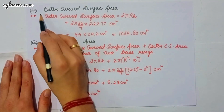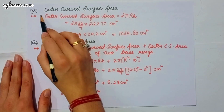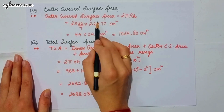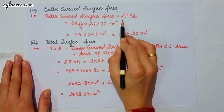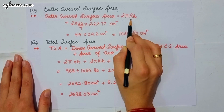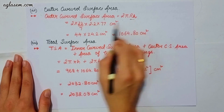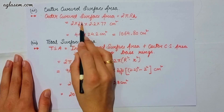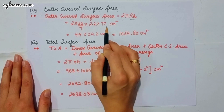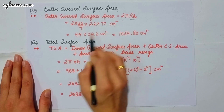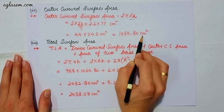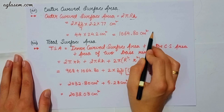The second part asks for the outer curved surface area. Outer curved surface area = 2πRh = 2 × (22/7) × 2.2 × 77 = 1064.80 cm².